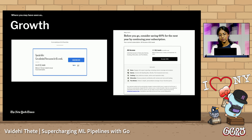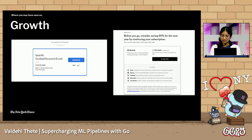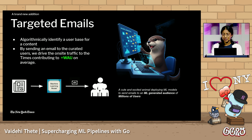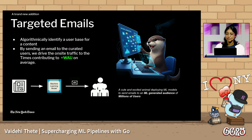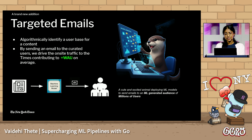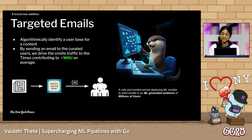For registered users who are in the beginning of their journey with us, we deploy ML models that power the paywall with the goal to incentivize registered users to become subscribers. And for subscribers who wish to part with us, we also deploy machine learning models that recommend a reduced price subscription, which incentivizes them to stay with us a little longer. Recently, we ventured into a brand new territory of targeted emails, which are used to identify a user base for a piece of content, boosting on-site traffic by recommending content tailored to user preferences.